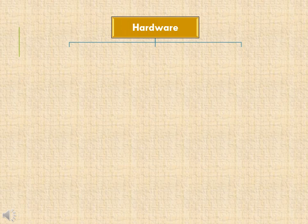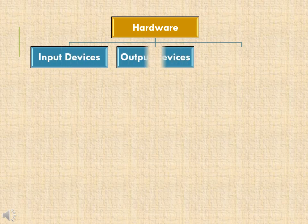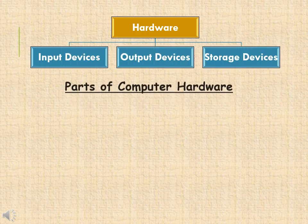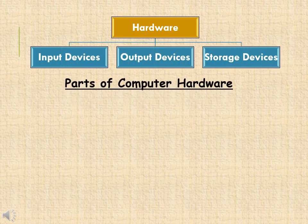Hardware of a computer is further classified into three parts: input, output, and storage devices. Now we will study about all three parts in detail.